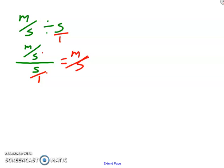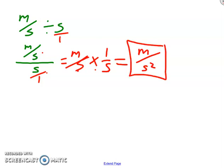So that's the same thing as meters per second, and we're going to multiply it by the reciprocal, one over seconds. Nothing can cancel out, so meters over seconds times seconds: meters over seconds squared as a finished unit.